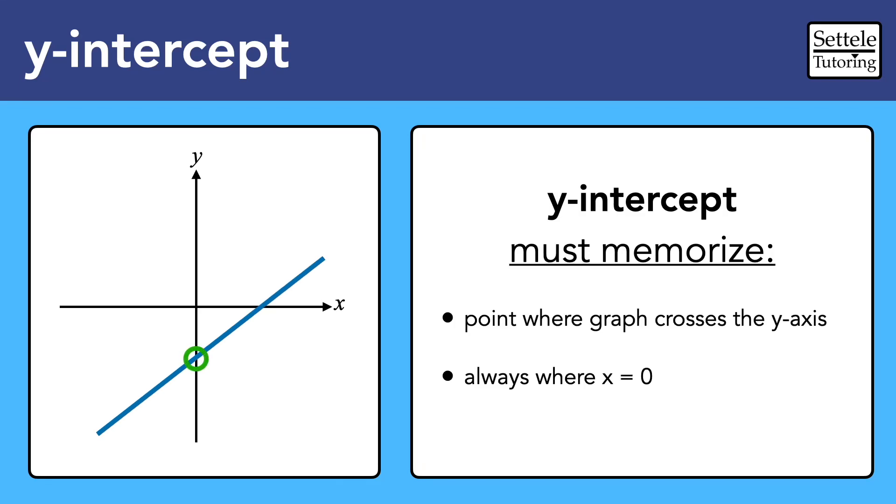The y-intercept of an equation is the point where the graph crosses the y-axis. Every single y-intercept has an x-coordinate equal to 0, so you can find the y-intercept of any equation by plugging in 0 for x.